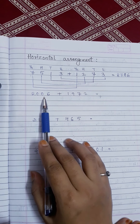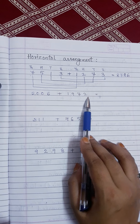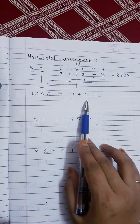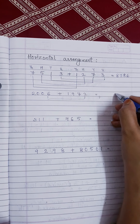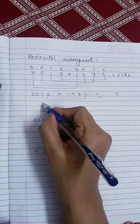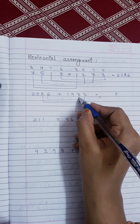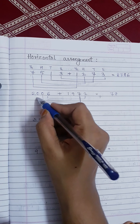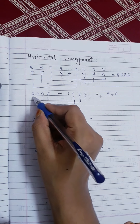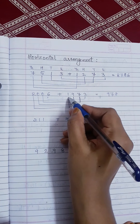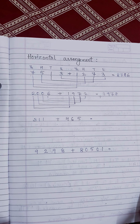Next number: two thousand six plus one thousand nine hundred and seventy-two. How can we add this number unit to unit? Here, two and six are at the unit place, so six plus two is eight. Zero is at the tens place and seven is at the tens place, so zero plus seven is seven. Hundred to hundred: zero plus nine is nine. Thousand to thousand: two plus one is three. So the number is three thousand nine hundred and seventy-eight.